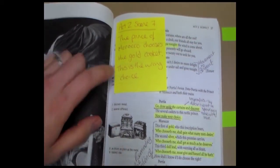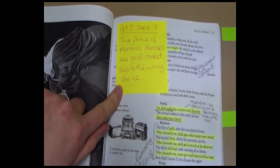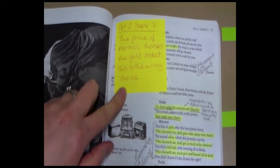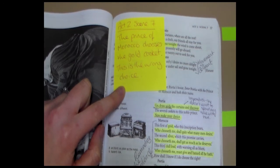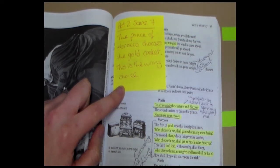Act 2, Scene 7. So once again we start with our plot overview on our post-it note. In Act 2, Scene 7, the Prince of Morocco chooses the gold casket and we learn that this is in fact the wrong choice.